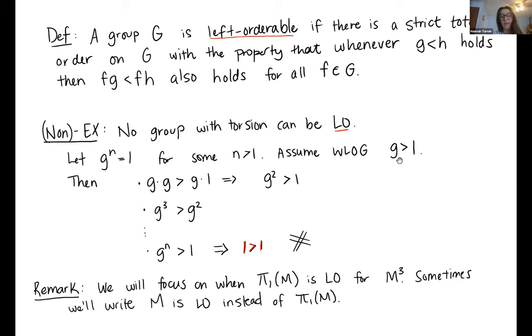But there are many groups that are not left orderable. For example, if a group has torsion, it can't be left orderable. We'll go through this cute little argument that shows that. If I assume that I have an element that's not the identity, and some power of it is the identity, well, one thing I can say is since it's not the identity, it's either bigger than one or smaller than one. We'll just assume it's bigger than one. The argument if it's smaller than one is exactly the same.